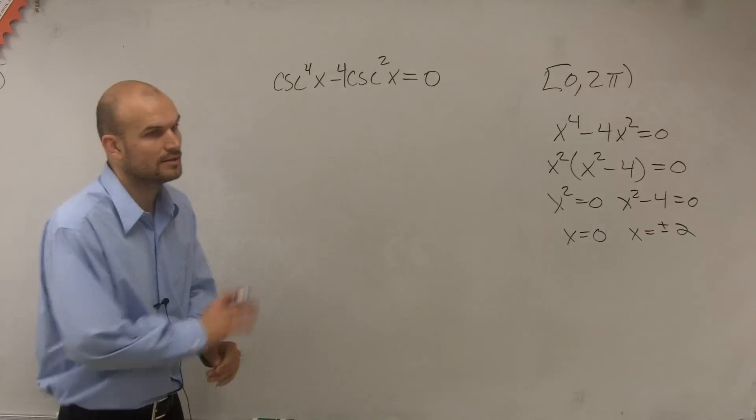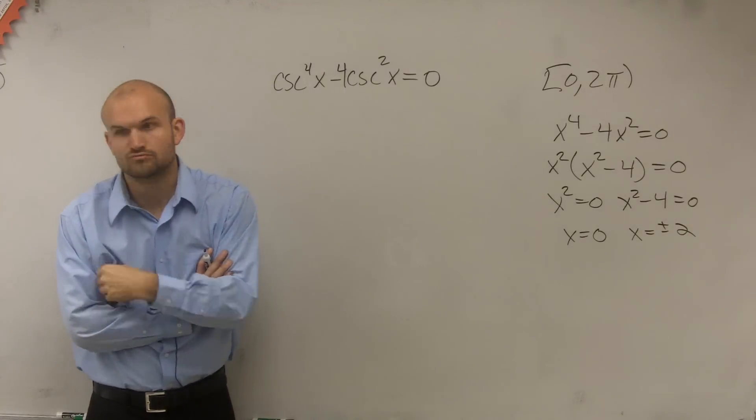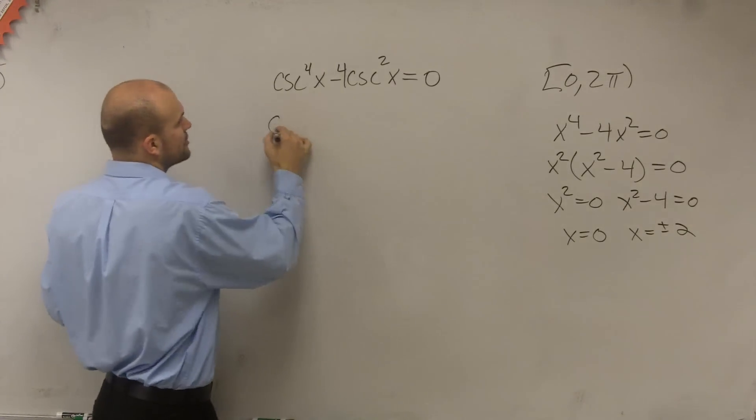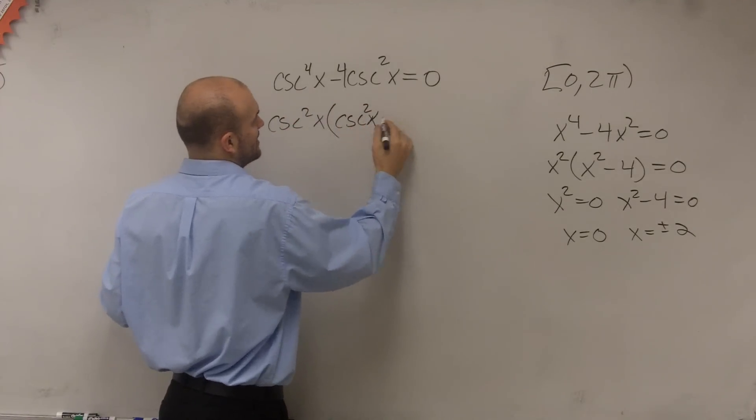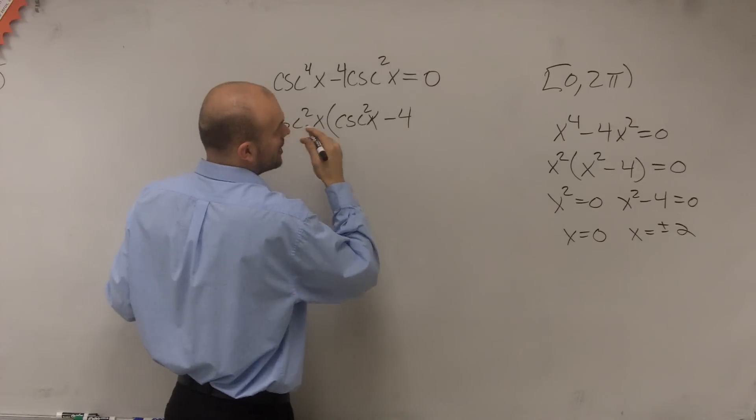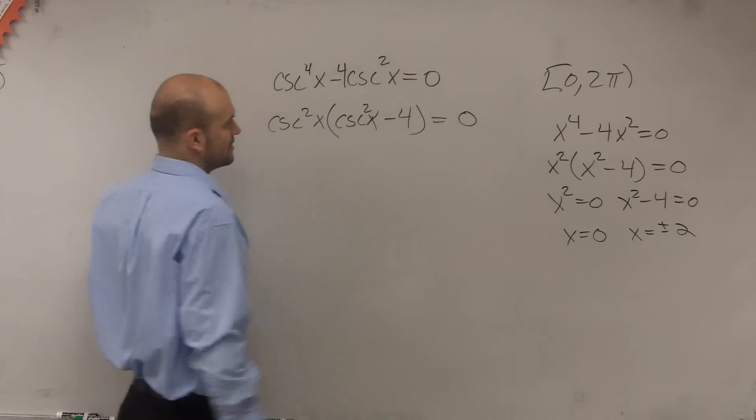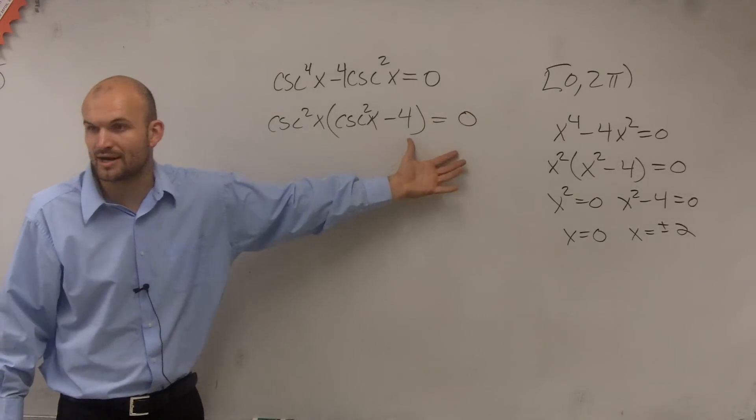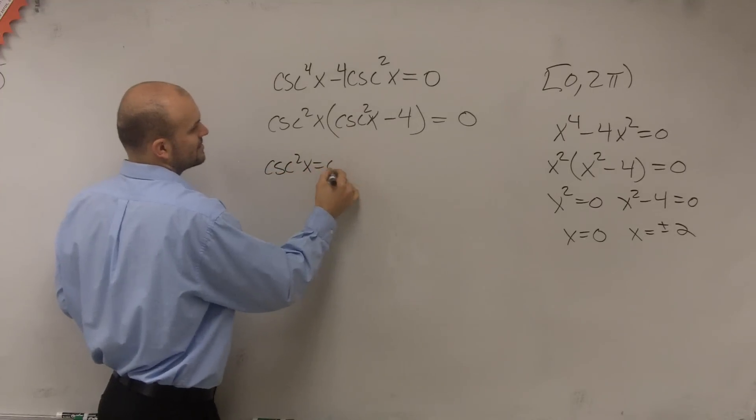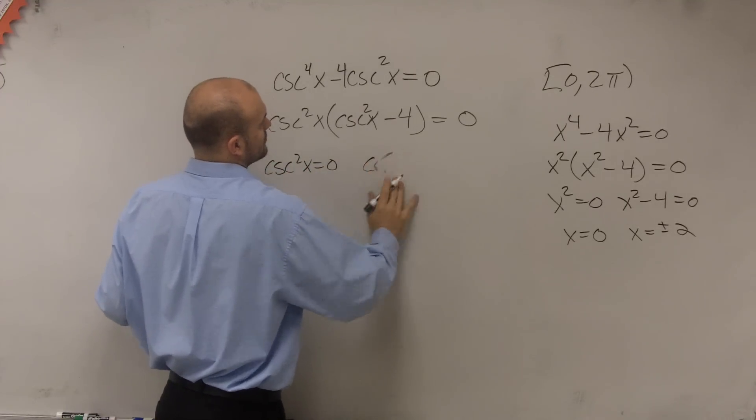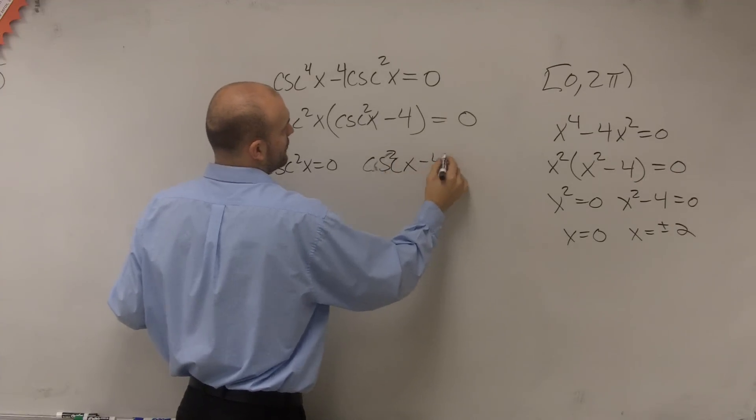So when we look up here, all right, what do you guys think we're going to want to factor out? Cosecant squared. Cosecant squared, right? So you factor out cosecant squared of x, and you're going to be left with cosecant squared of x minus 4 equals 0. Now we have a product equal to 0. So we say, cosecant squared of x equals 0, and cosecant squared of x minus 4 equals 0.